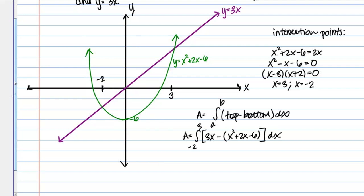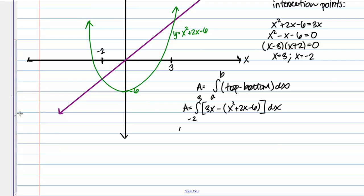And we're integrating with respect to X. So if we just expand inside that integral we get 3X minus X squared minus 2X plus 6 DX, which I can simplify just a little bit to negative X squared plus X plus 6 DX.